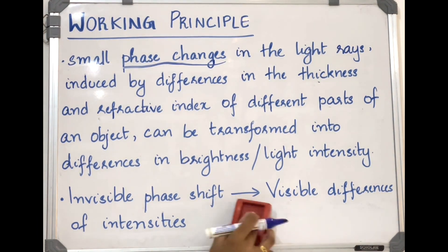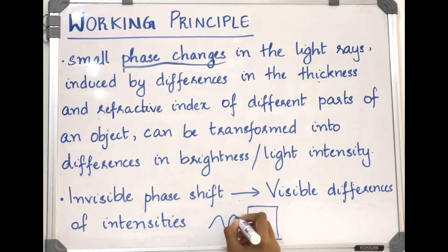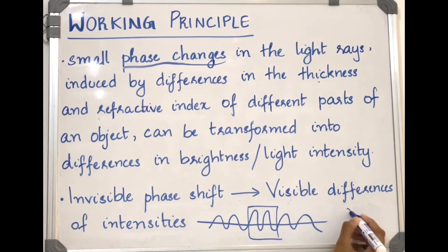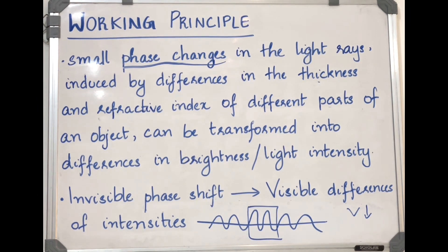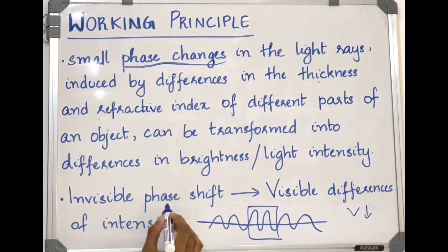What is phase shift? When light passes through a dense medium, the velocity of the light decreases and there will be a phase shift. Phase shift means whenever light interacts with different materials or passes through various media, there can be a change in the timing of the peaks and troughs of the light wave. This phase shift can lead to constructive interference or destructive interference.